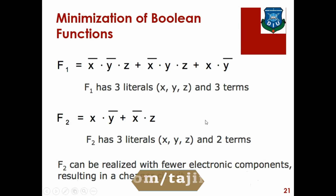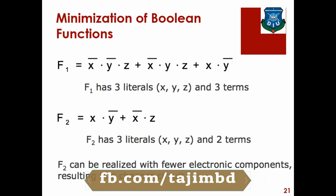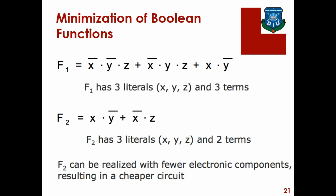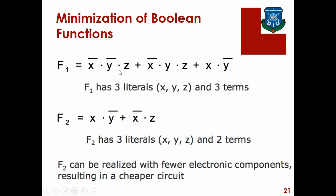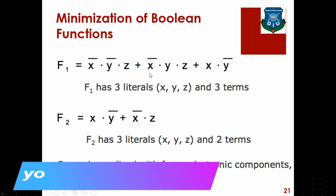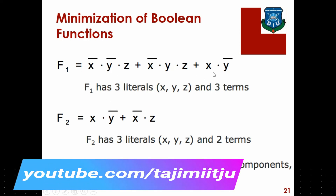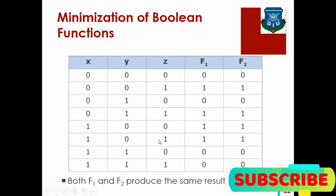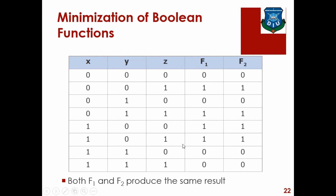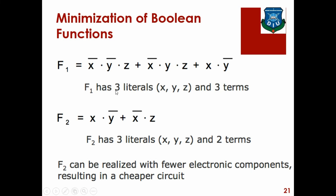I will show you the Minimization of Boolean Functions. This is the first tier — the truth table. Here is the bottom tier. For how many inputs are there? We have x, y, and z — 3 inputs.